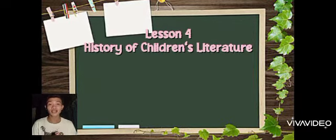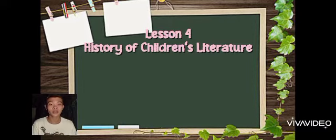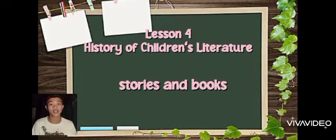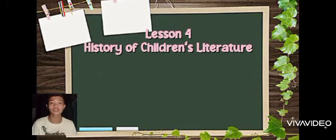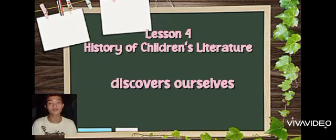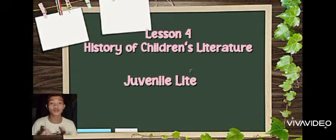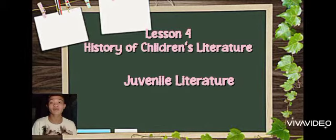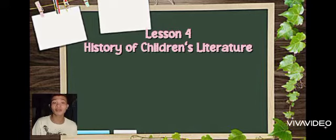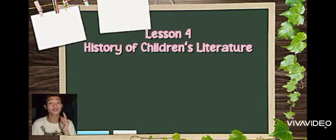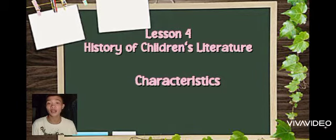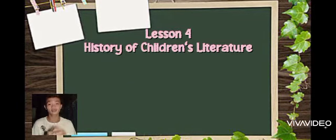For many of us, some of our fondest childhood memories are associated with the stories and books we learned from our parents, heard from teachers, and discovered for ourselves. Children's literature, or juvenile literature, was published during the 17th century, which talks about the development of children's literature in terms of its characteristics and how it reflects the spirit of interest during its period.